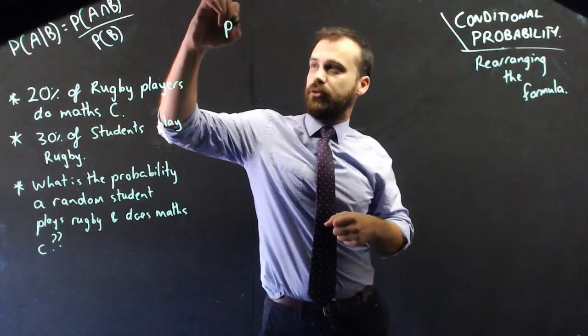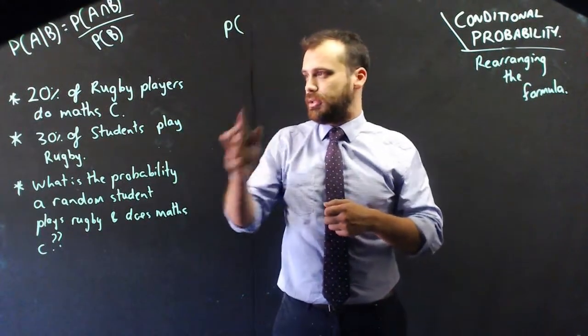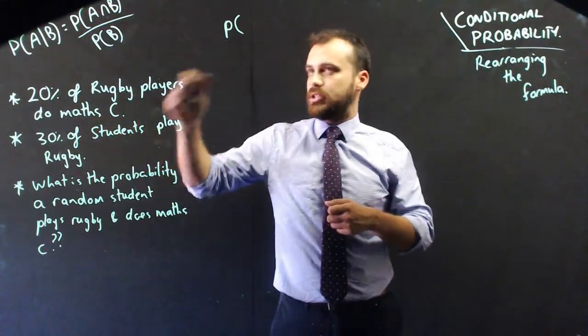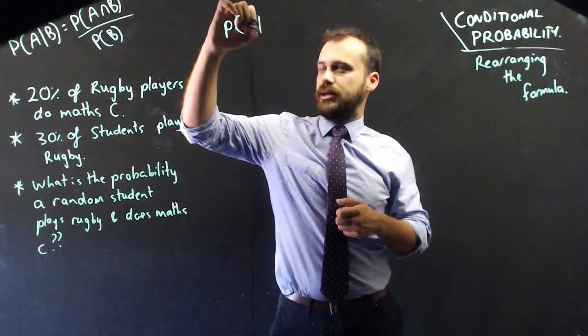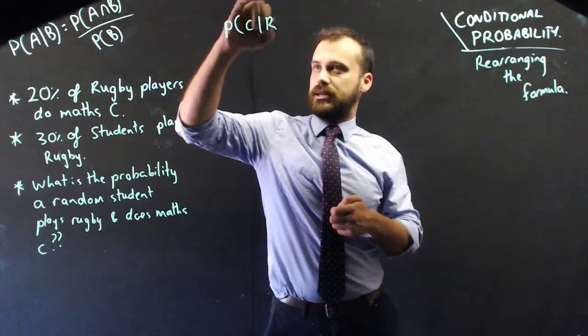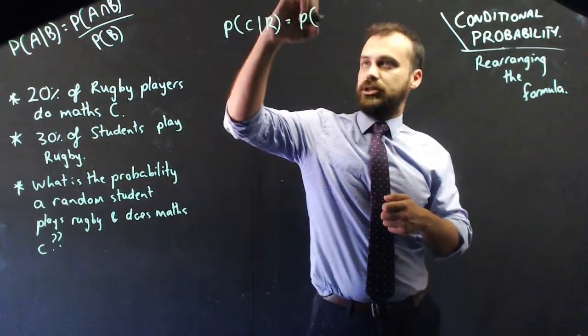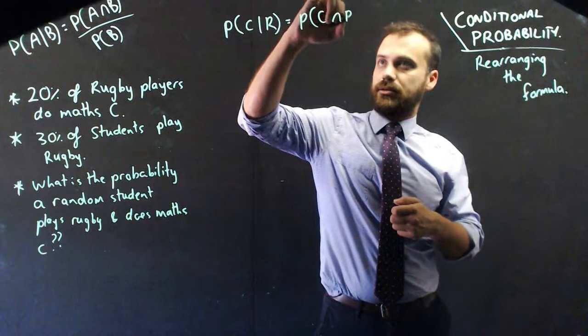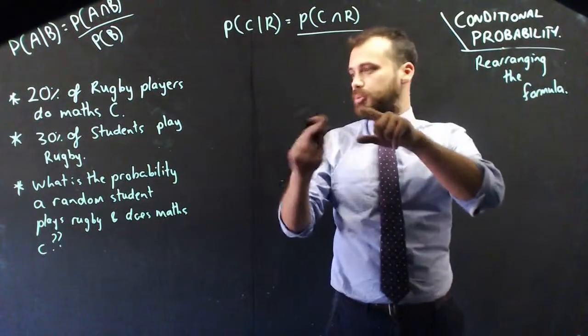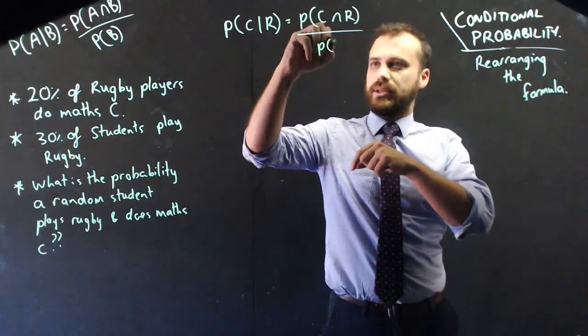So, I can put it into my formula here. This first one, you have to be careful which order it's in. It's 20% of rugby players do Math C. So, I already know that they're rugby players, so that's that, and they're doing Math C. Okay, and that's the intersection of C and R, and that's going to be equal to, sorry, divided by the probability that they play rugby, the probability of the second one. It's always the second one there.